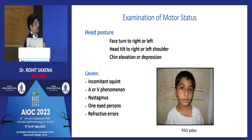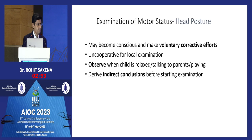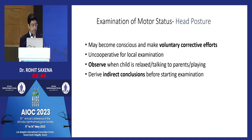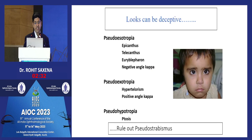Head postures can be diagnostic. In this child with congenital superior oblique palsy, you can see classical mid-facial hypoplasia because the child was holding his head tilted to the left side while growing, causing asymmetric facial development. It's very important to identify motor status and head posture before correcting it and making indirect conclusions.